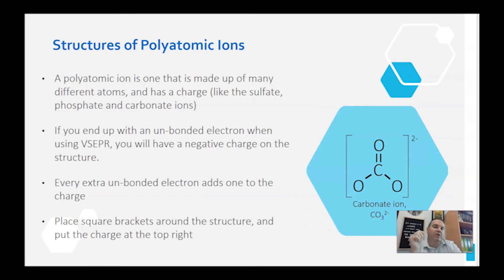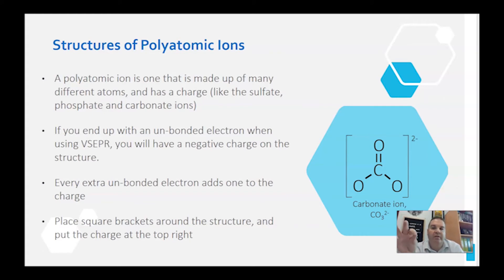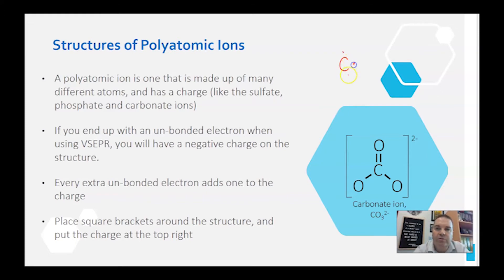Polyatomic ions — 'poly' means many, so it's many atoms with a charge on it. We looked at sulfuric acid and carbonic acid just before. When we're looking at just the ion — the charged part — you'll end up with unbonded electrons. So if you did up the carbonate ion properly, you'd start with carbon having one, two, three, four electrons around it.